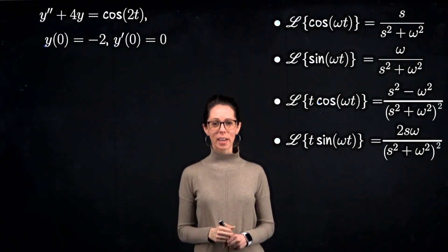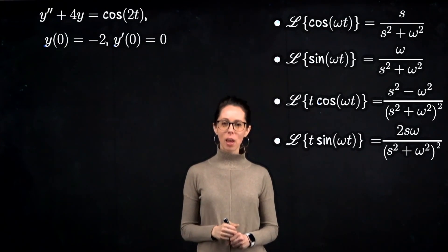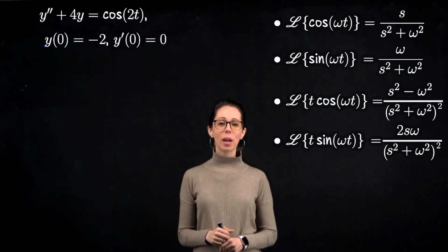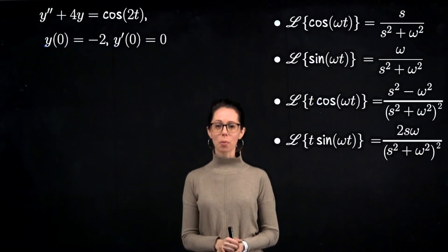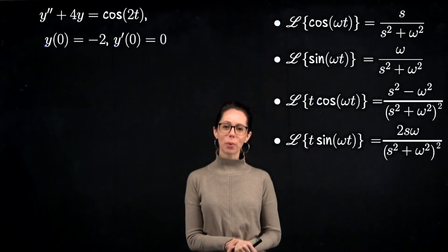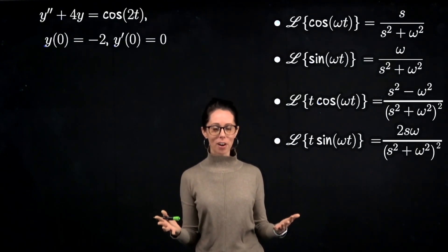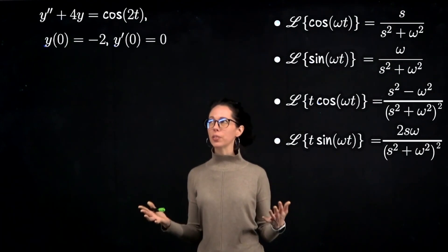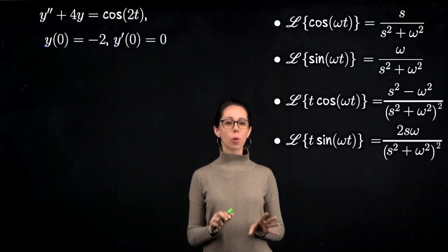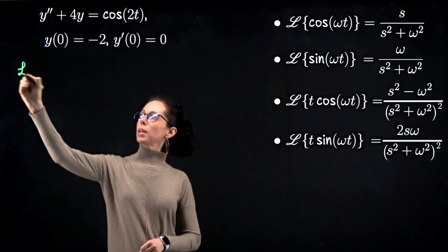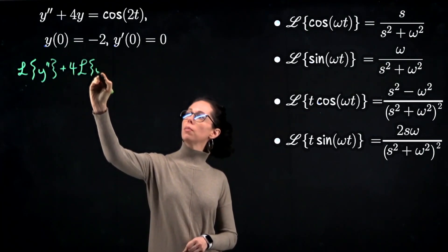Let's now solve the second-order differential equation: y double prime plus 4y equals cosine of 2t, with initial conditions y of 0 equals negative 2 and y prime at 0 equals 0. The first step is to take the Laplace transform of both sides, apply linearity on the left-hand side — so that's the Laplace transform of y double prime plus 4 times the Laplace transform of y — and transform cosine of 2t on the right.